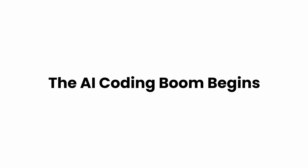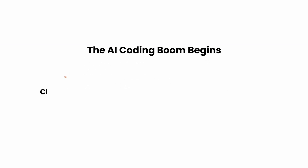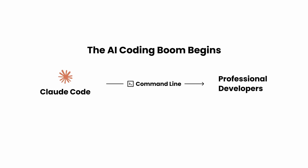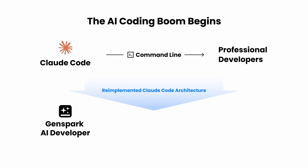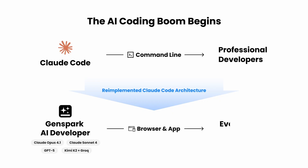The AI coding boom begins. Everyone loves Cloud Code, the most advanced autonomous coding agent that lets developers build without touching code. Now it's for everyone. We re-implemented Cloud Code architecture as GenSpark AI developer. In addition to Cloud models, you can choose from many frontier coding AI models and work in browser and app and get professional results. No coding skills needed. Anyone can build now.